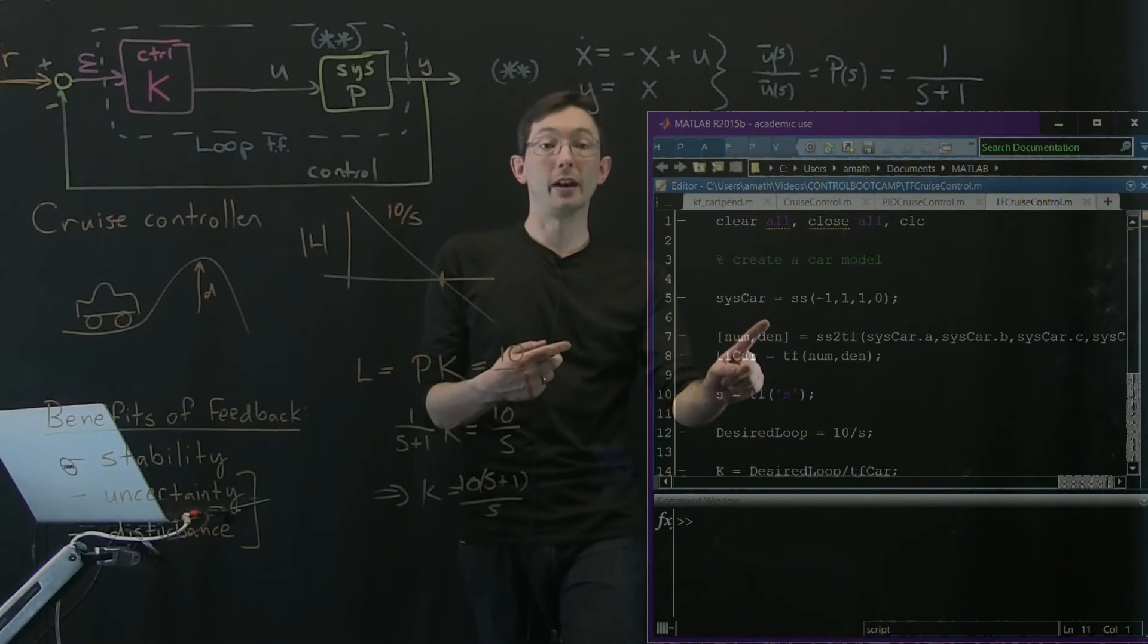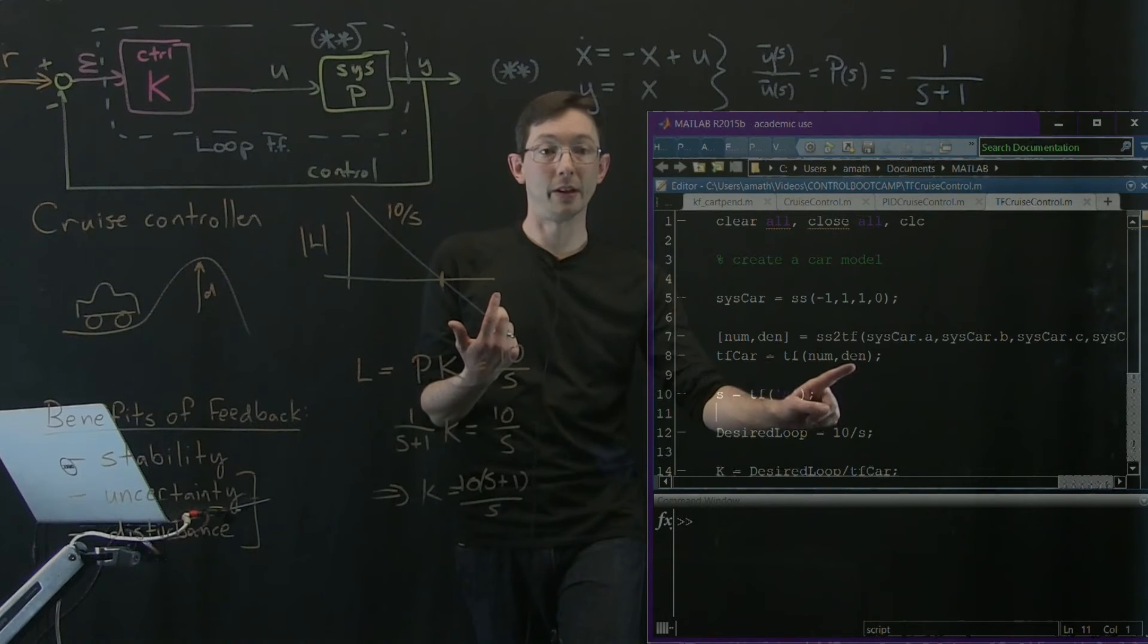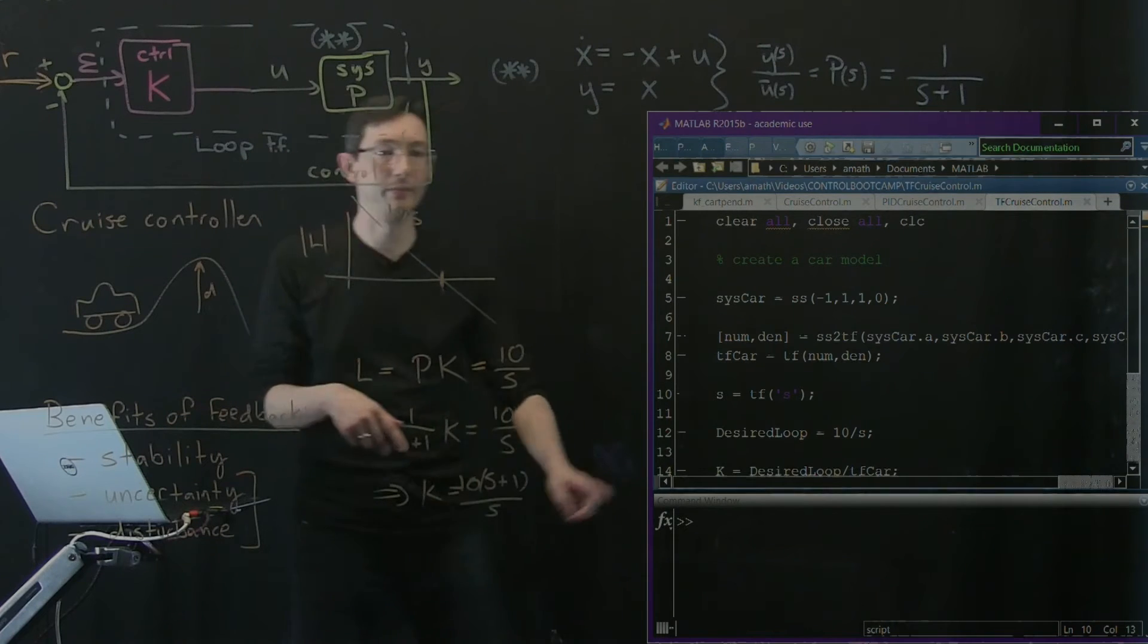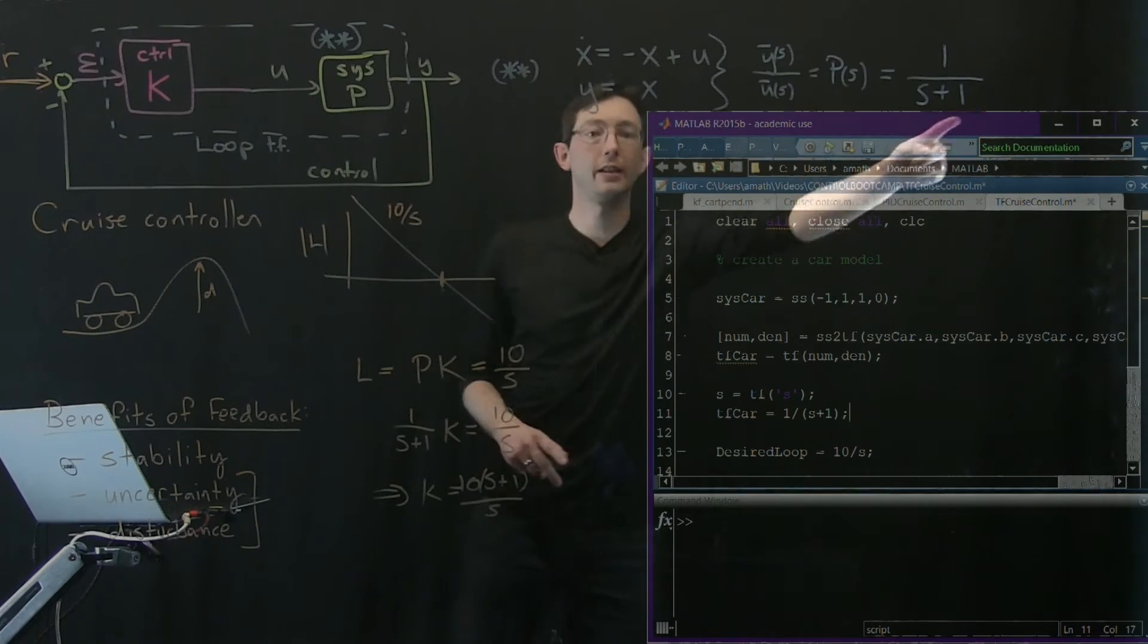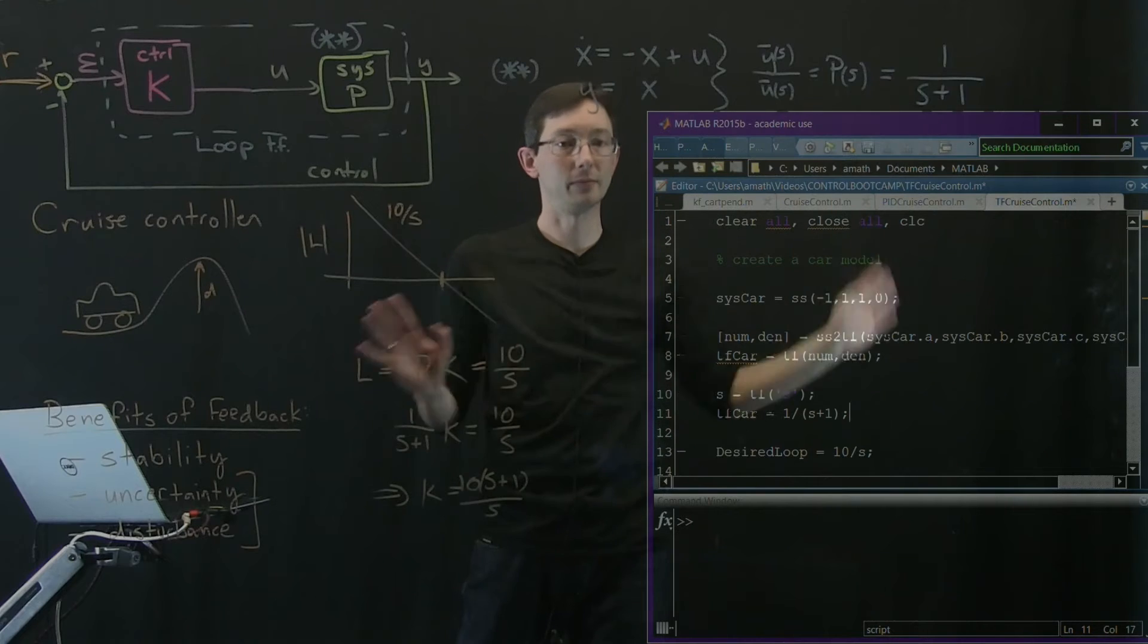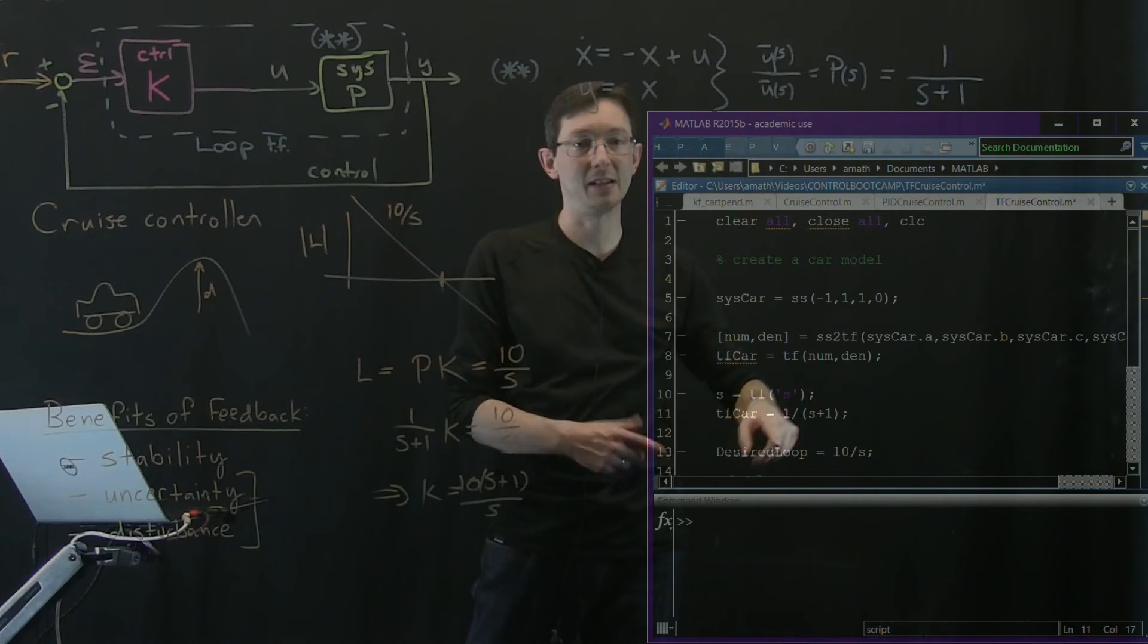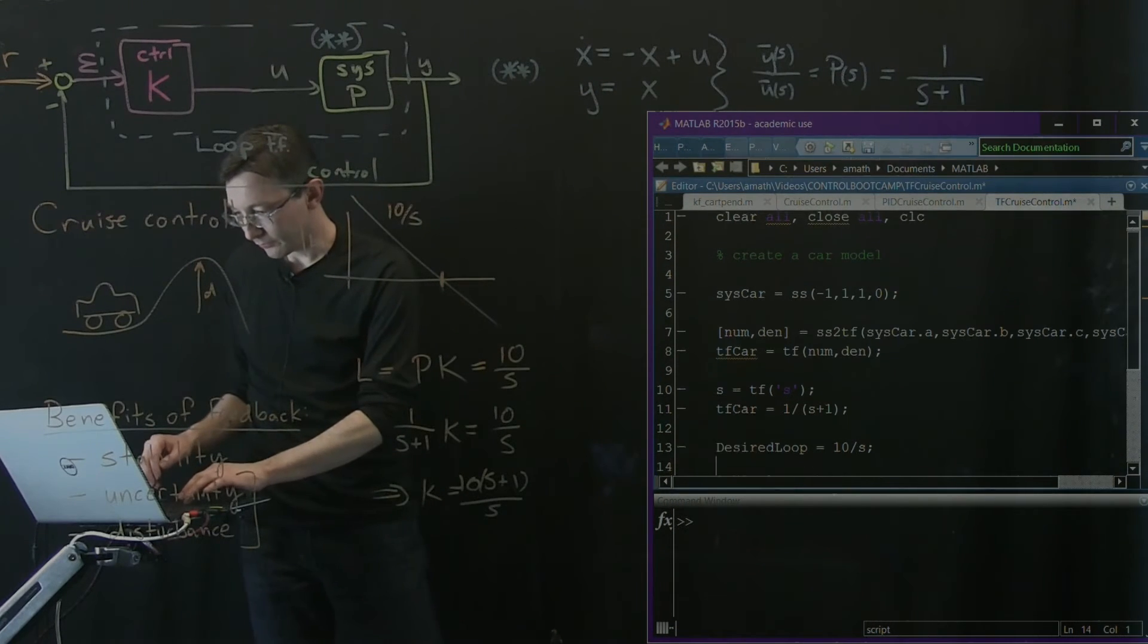And then I can make a transfer function from that numerator and denominator called tfcar. You don't really have to do this. You could also define your Laplace variable and just say tfcar equals 1 over s plus 1. That's also totally fine because we know the transfer function. I could have derived it from state space using these commands, or I could just enter it as a transfer function. Sometimes you will want to start with state space and use the MATLAB commands if it's a little bit messy. But in this case, we could just write down the transfer function.